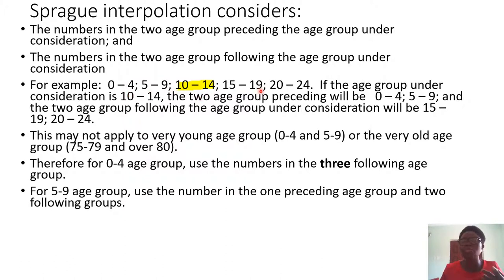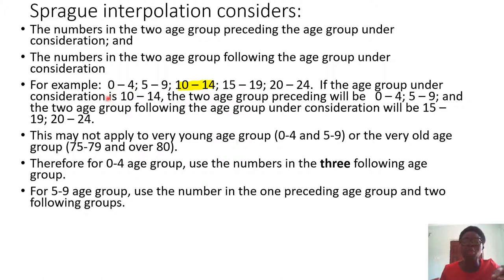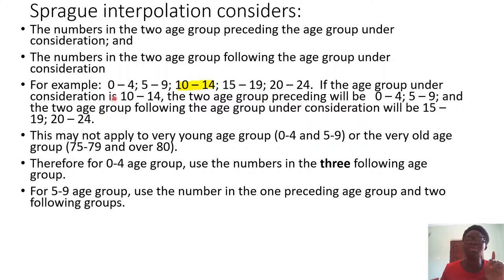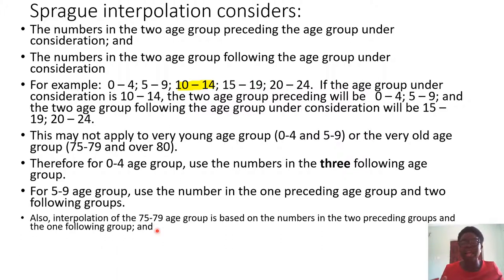For the 0 to 4 age group, you consider 0 to 4, 5 to 9, 10 to 14, and 15 to 19 — those three following groups. For the 5 to 9 age group, you consider 0 to 4 as the one preceding group, then 5 to 9 as the group itself, followed by 10 to 14 and 15 to 19. Unlike 0 to 4, here you have one preceding group and still use three following groups.